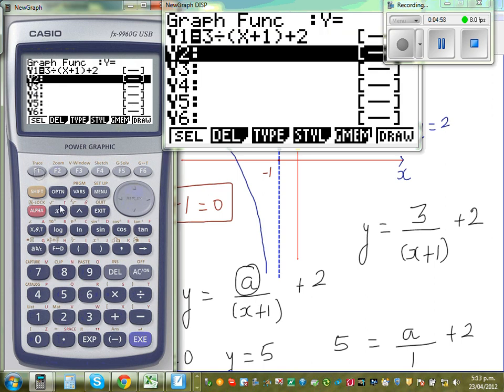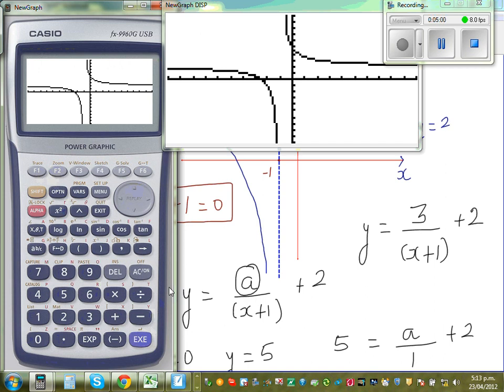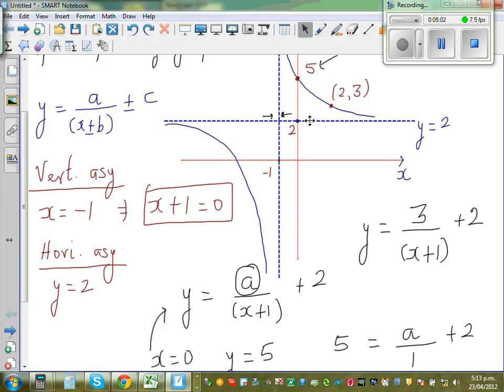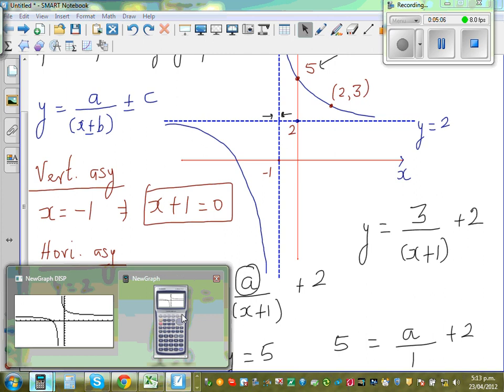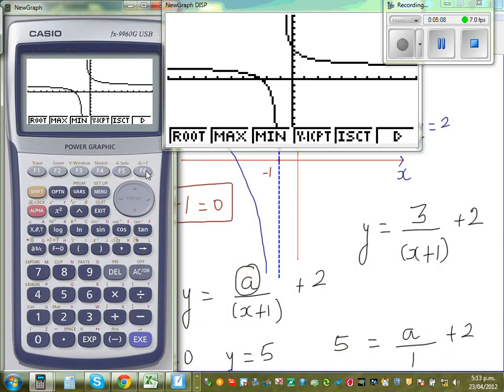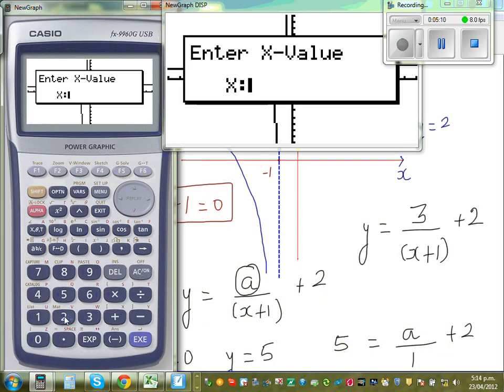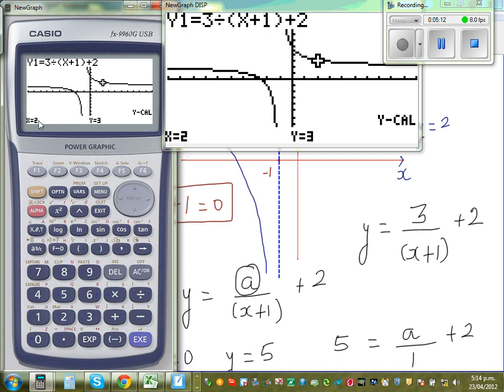And to confirm the points, always good to confirm whether you've drawn it right. I'm going to confirm this point. When x is two, y should be three. So let me get the calculator out. So g solve, y calc. When x is two, y is three. When x is two, y is three. And you can confirm the y intercept like this. Y intercept is 0 comma 5.